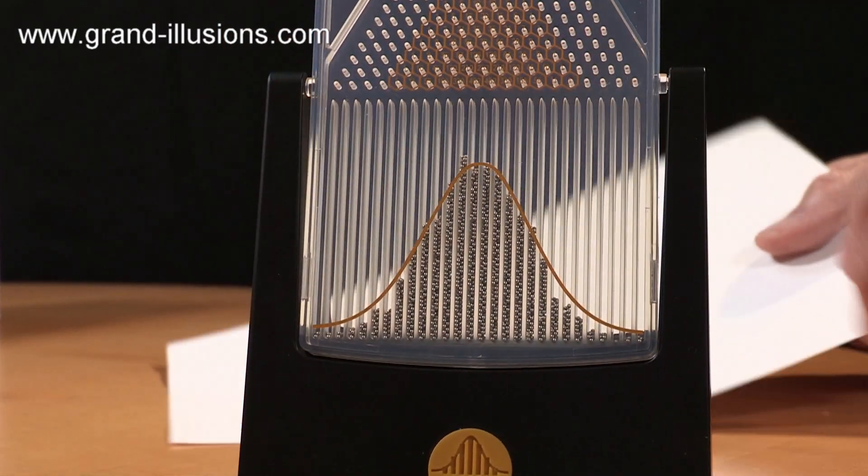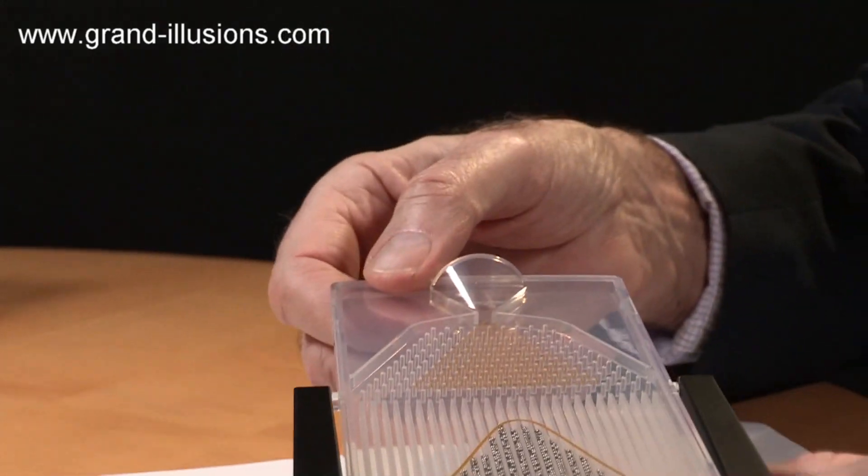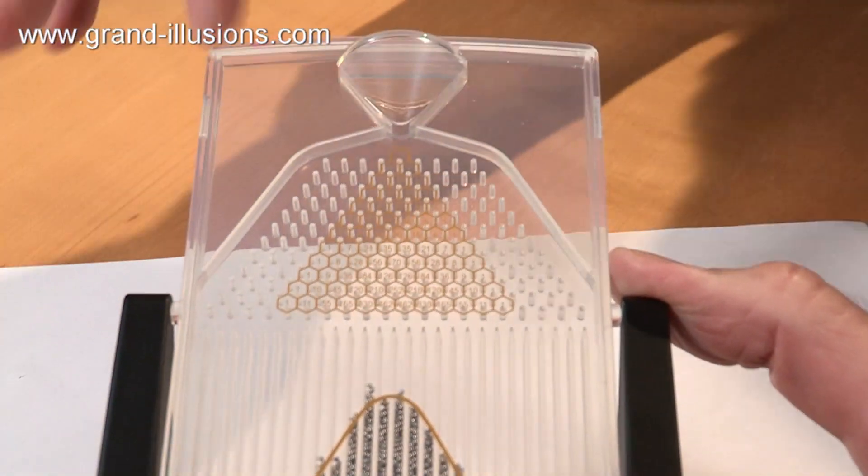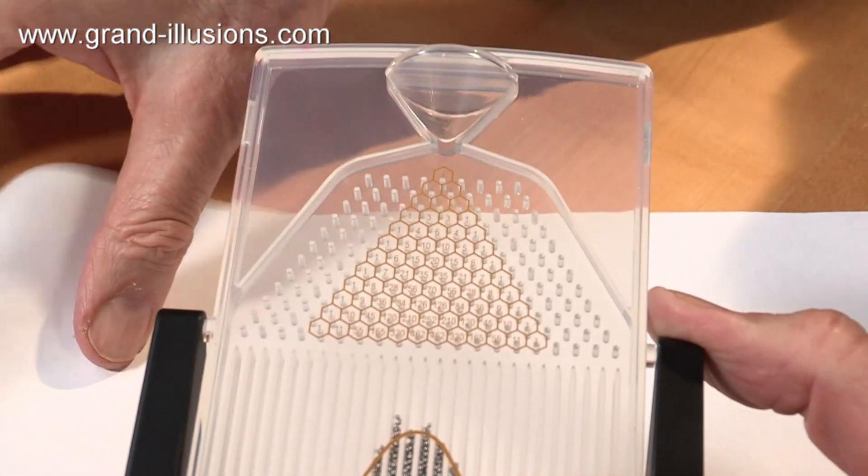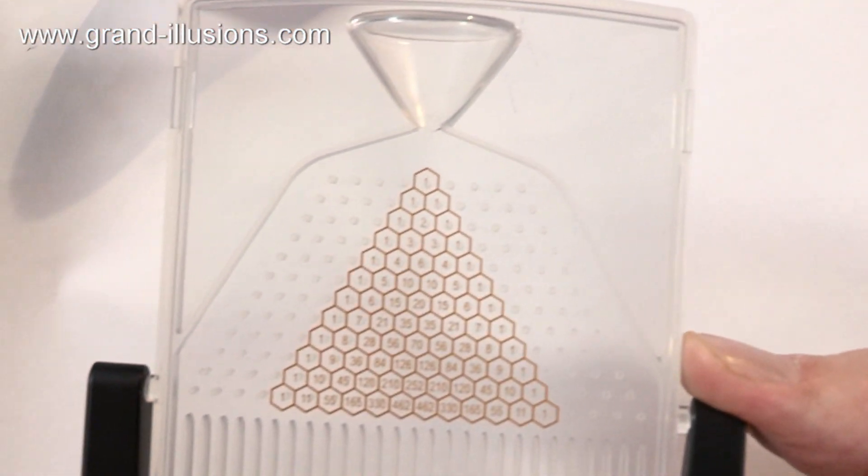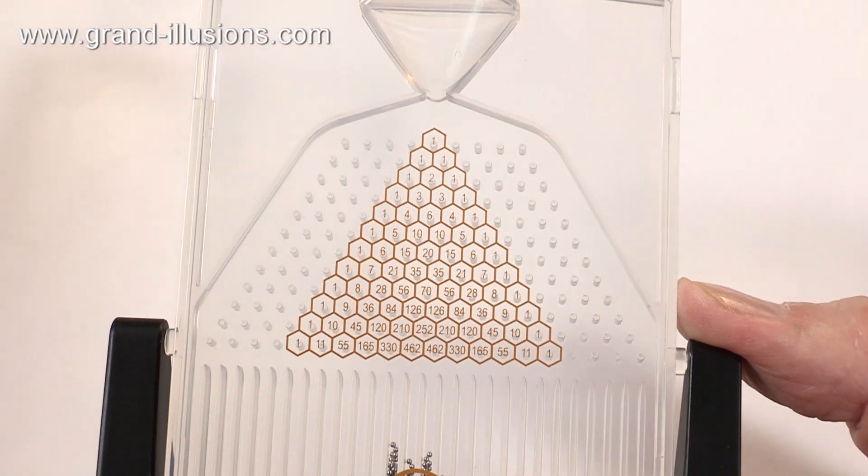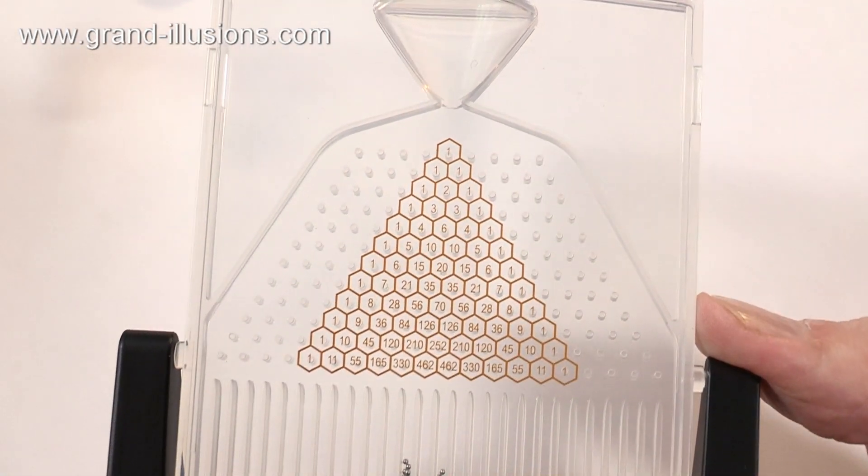But there's more to it than that because the array of pins here has got superimposed on it a triangle, and the numbers on the triangle are very curious. They're very hard to see, but they are something very significant. They're called Pascal's Triangle.